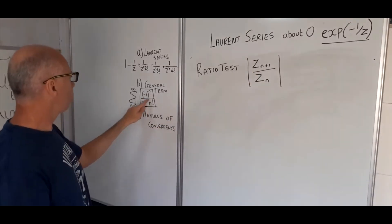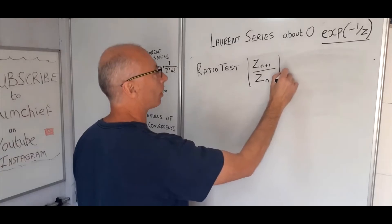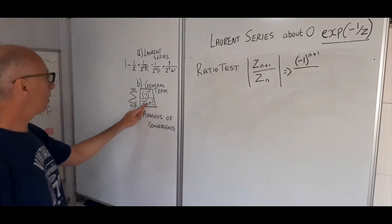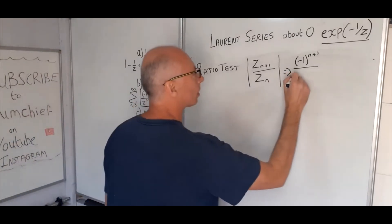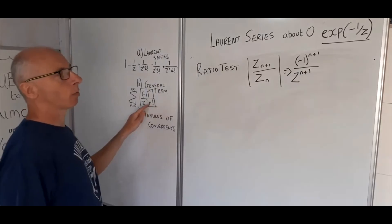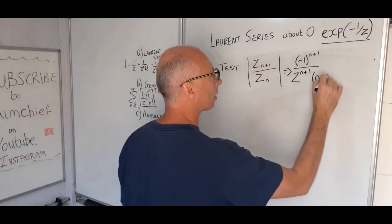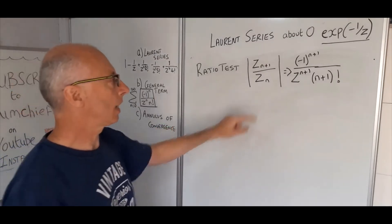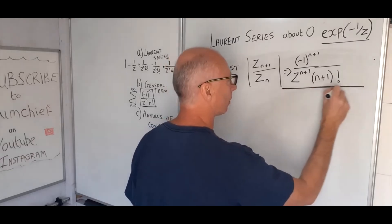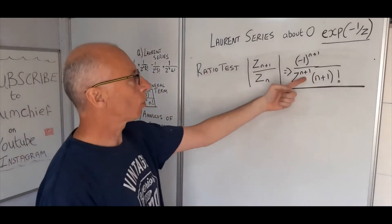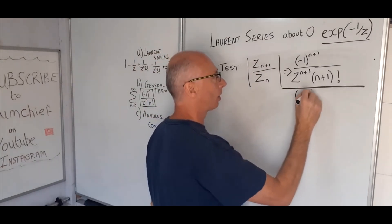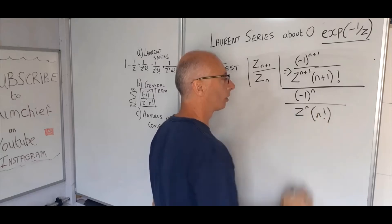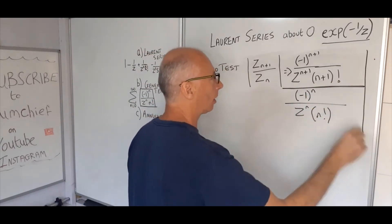So z sub n plus one: wherever we see an n we write n plus one. That gives us minus one to the n plus one, divided by z to the n plus one, times n plus one factorial — all in absolute value. Then we divide by z sub n, which is minus one to the n over z to the n over n factorial. That is still in absolute value.